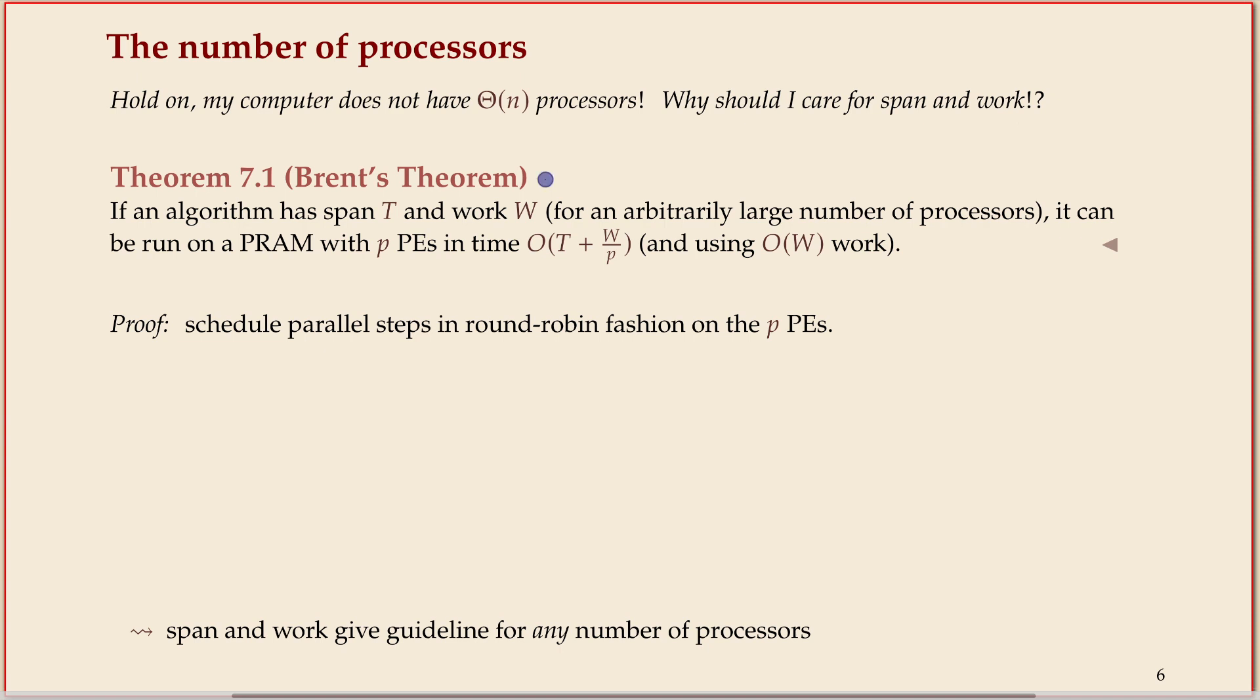It turns out the answer is still useful because we can convert work and span into the actual time on a machine with any number of processors. That's known as Brent's Theorem. If we have any algorithm where we know span and we know work—assuming for a specific input size and so on, under the usual models it can be worst case, can be average case, that doesn't matter—but if the span works for an arbitrarily large number of processing elements, then we can also simulate the same algorithm if we have a given number of processing elements. The time we achieve is the span plus work divided by the number of processors.